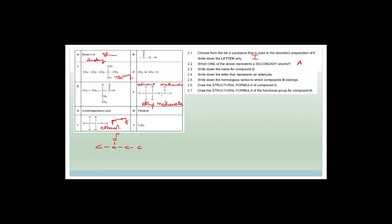Write down the name of compound D. This is an interesting compound because it's got two carbons in it, so we know it's eth-. It's got a double bond, so it's ethene. But there's a chlorine on it, so this is chloroethene. You don't have to specify which carbon the chlorine belongs to because either way would work.